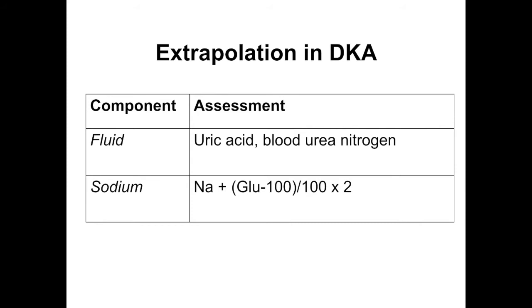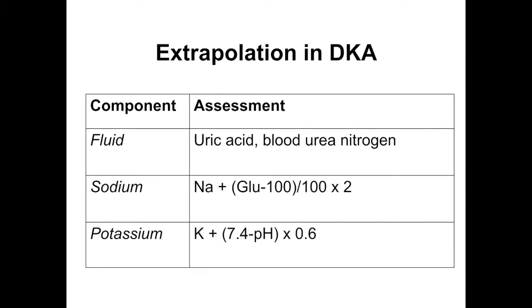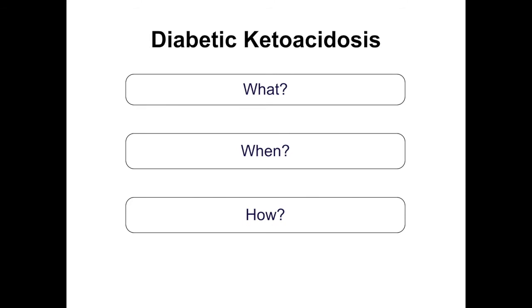For potassium assessment: for every 0.1 drop in pH due to metabolic acidosis, potassium falsely elevates by 0.6 mmol/L. So if pH is 6.9 and potassium is 5.5, you are actually looking at a deficit of around 3 mmol/L of potassium, because once acidosis is corrected, potassium will shift into cells. Careful assessment of both corrected sodium and true potassium is essential in DKA management.